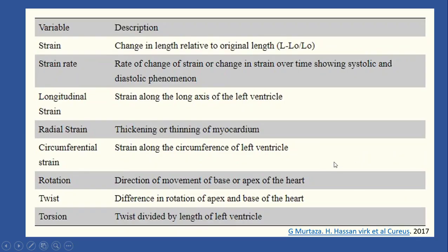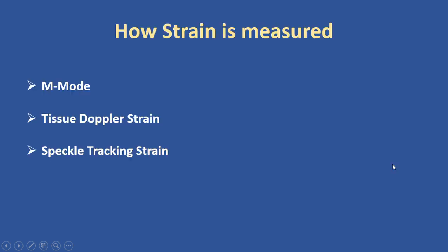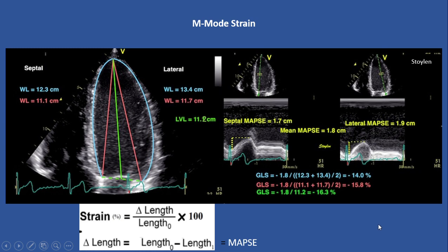Here are those definitions and terms we use in strain study. Now let's see how strain is measured. We have three ways to measure strain: M-mode, tissue Doppler, and speckle tracking. Let's start with M-mode strain.